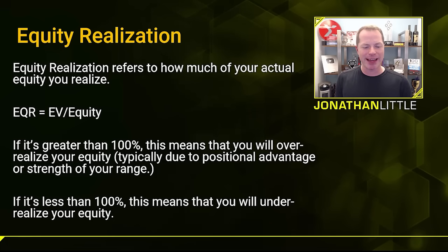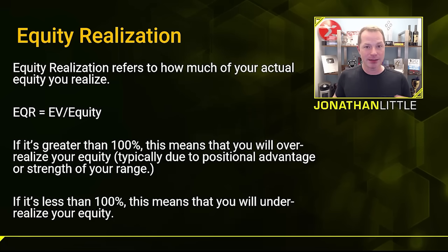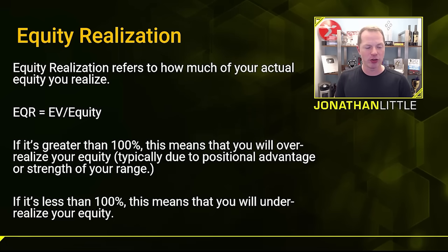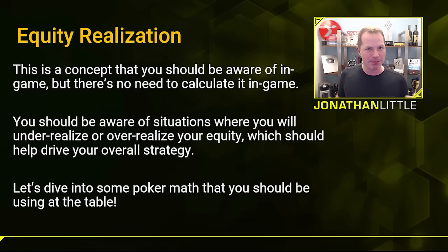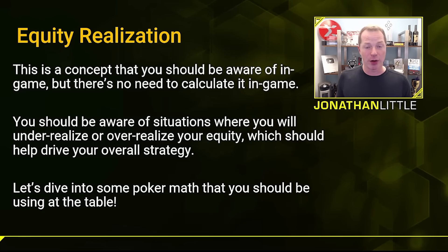You figure out your equity realization by taking your expected value and dividing it by your equity. If it's greater than 100%, it means you're going to over-realize your equity, which is great — this is usually when you are in position and when you have a strong range. If it's less than 100%, which will very often be the case when you are out of position, you're going to under-realize your equity. You just need to be aware that some scenarios result in over-realizing your equity when in position with a strong range, and some result in under-realizing when out of position with a weak range.